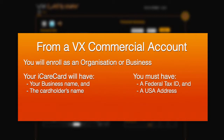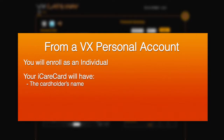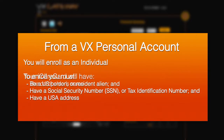You must have a federal tax ID and a US address. From a VX Personal account, you will enroll as an individual. Your iCare Card will just have the cardholder's name on it. You must be a US person or resident alien, have a social security number or tax identification number, and have a US address.